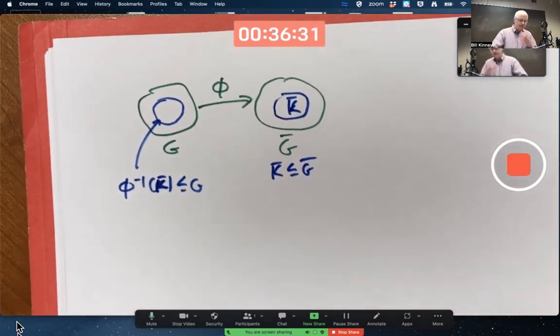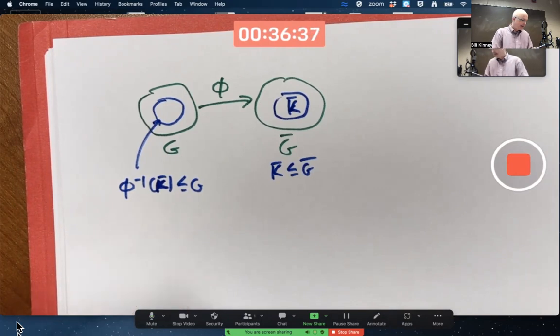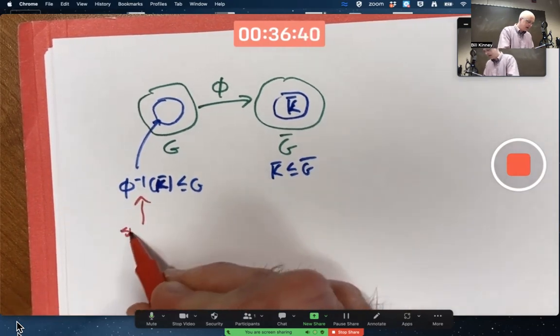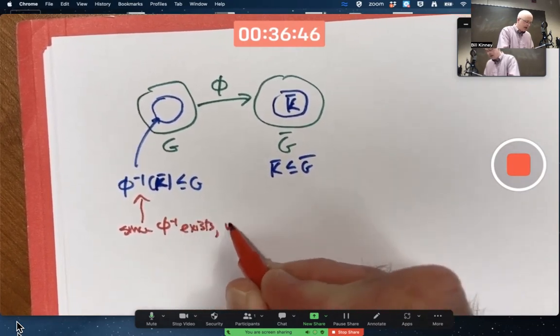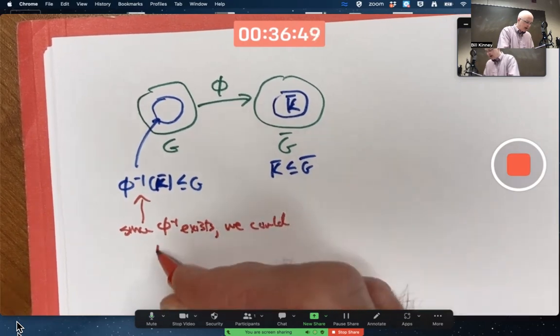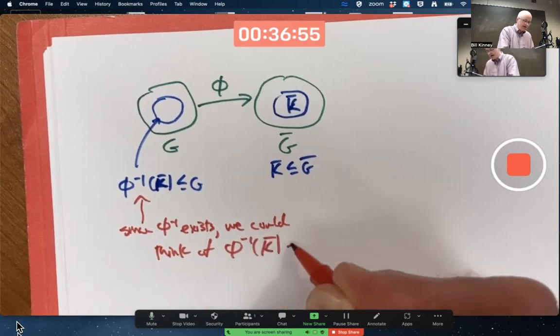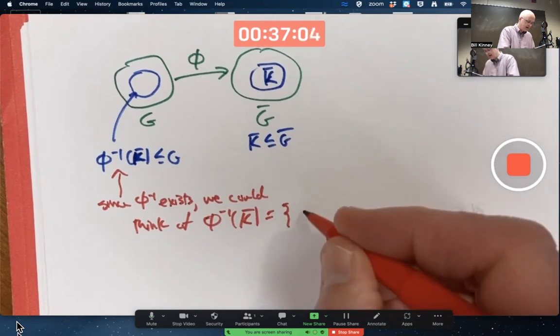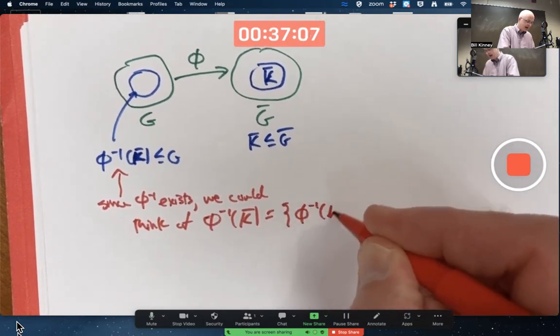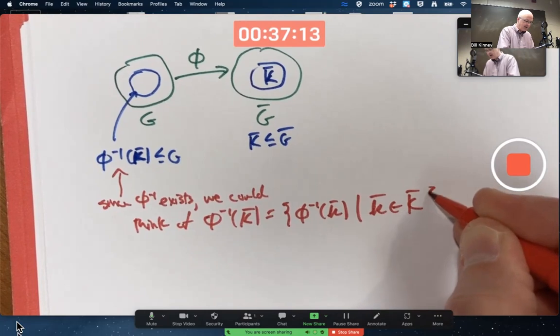Now, it's a little confusing because technically speaking, since φ inverse exists, the inverse function of φ exists, we could think of φ inverse of K-bar to be the set of all outputs of φ inverse as the input to φ inverse ranges over K-bar. The set of all elements, φ inverse of K-bar, little K-bar, as little K-bar ranges over capital K-bar. I could think of it that way, as a direct image of φ inverse if I wanted to here, because I'm assuming φ is an isomorphism.